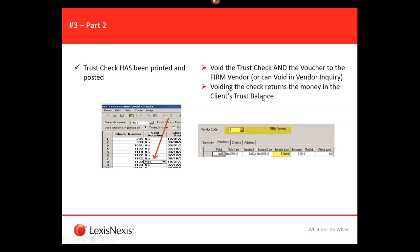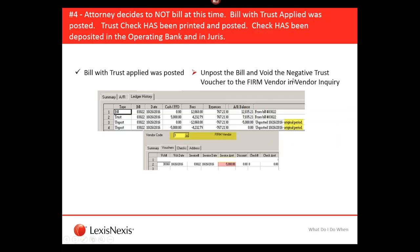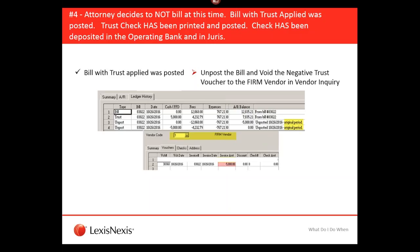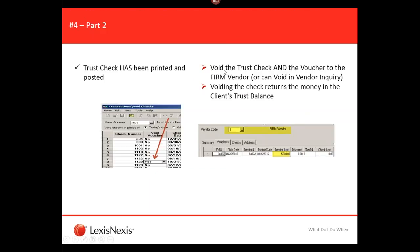Issue four: same scenario, but now the trust check has been printed, posted, and deposited in the operating bank in Juris. Unpost the bill as usual, get the negative trust voucher, and void it. Void the trust check and the voucher to the firm vendor — voiding the check returns the money to the client. Since the trust check has already been deposited at the bank, you're not able to physically void the check, so you create an AP voucher using the firm vendor, ensure the GL distribution is trust in transit, and create the quick check.